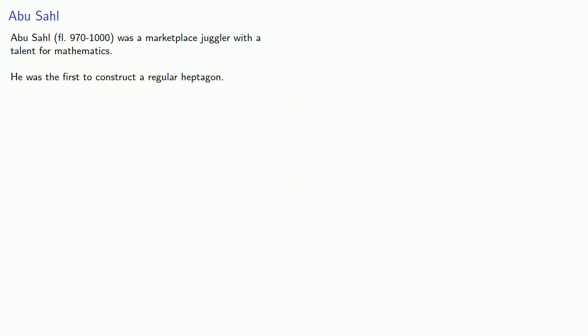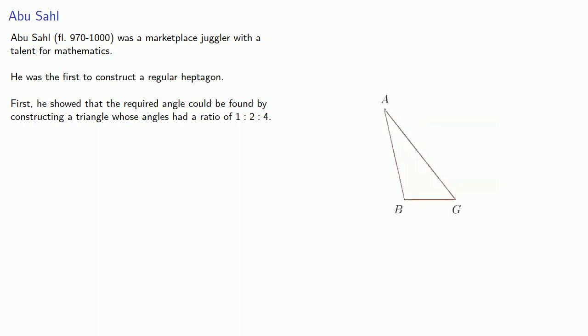Abu Sal's construction had two important parts. First, he showed that the required angle could be found by constructing a triangle whose angles had a ratio of 1 to 2 to 4.